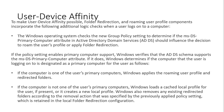To make User Device Affinity possible, folder redirection and roaming user profile components incorporate additional logic. When a user logs on to a computer, Windows checks the new Group Policy settings to determine if the msDS-PrimaryComputer attribute in Active Directory should influence the decision to roam the user profile or apply folder redirection. If the policy settings enable primary computer support, Windows verifies that the AD schema supports the msDS-PrimaryComputer attribute.